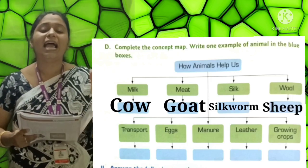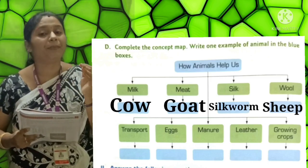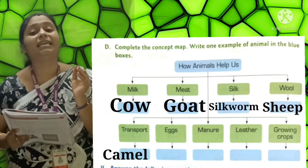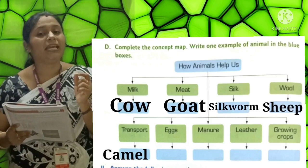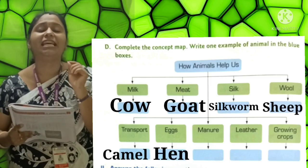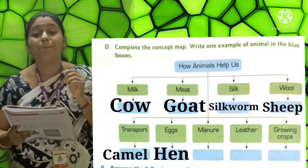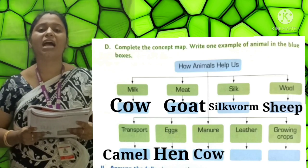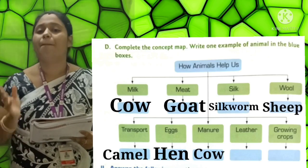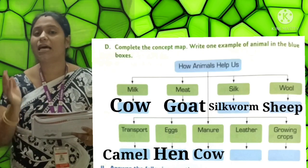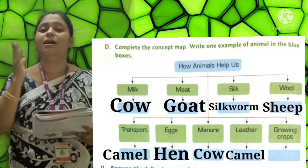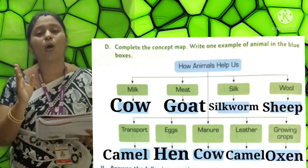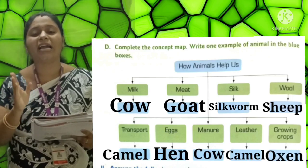Wool: Sheep (S-H-E-E-P). Transport: Camel (C-A-M-E-L). Eggs: Hen (H-E-N). Manure: Cow (C-O-W). Leather: Camel (C-A-M-E-L). Growing Crops: Oxen (O-X-E-N).